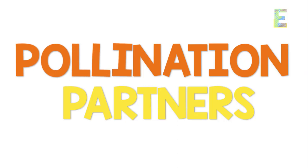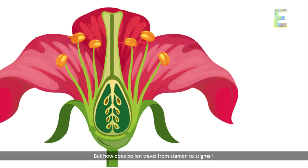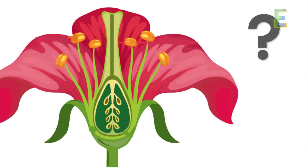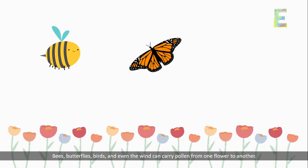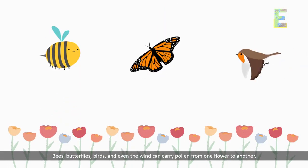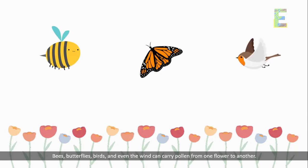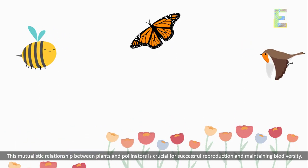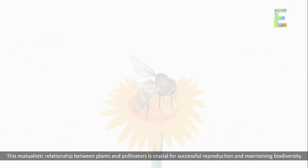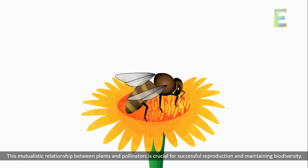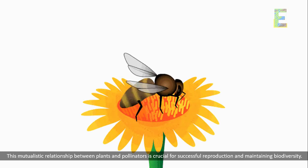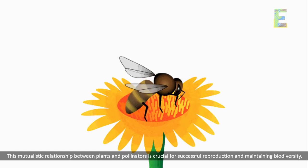Pollination partners: but how does pollen travel from stamen to stigma? That's where pollinators come into play. Bees, butterflies, birds, and even the wind can carry pollen from one flower to another. This mutualistic relationship between plants and pollinators is crucial for successful reproduction and maintaining biodiversity.